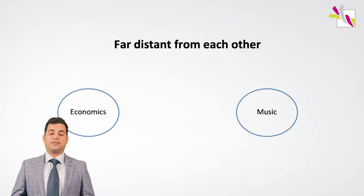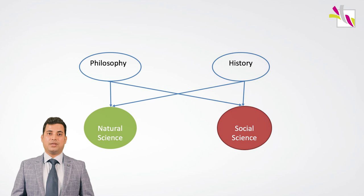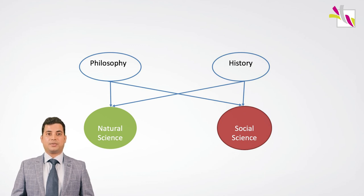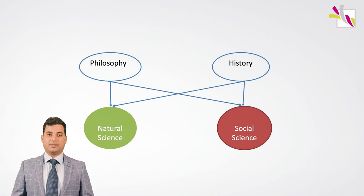For instance, economics and music are too distant from each other to be merged. Some disciplines are used cutting across to understand the epistemological foundations of a single discipline. Philosophy and history are of such kind. Both of these are considered core disciplines for both natural and social sciences. Philosophy of science and history of science are used to understand the epistemological stance of science, and both are also used to understand the epistemological foundations of core disciplines and research in social sciences.